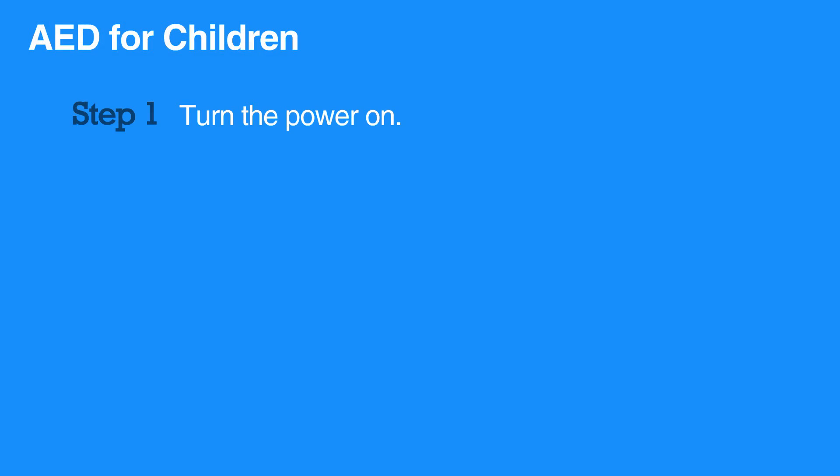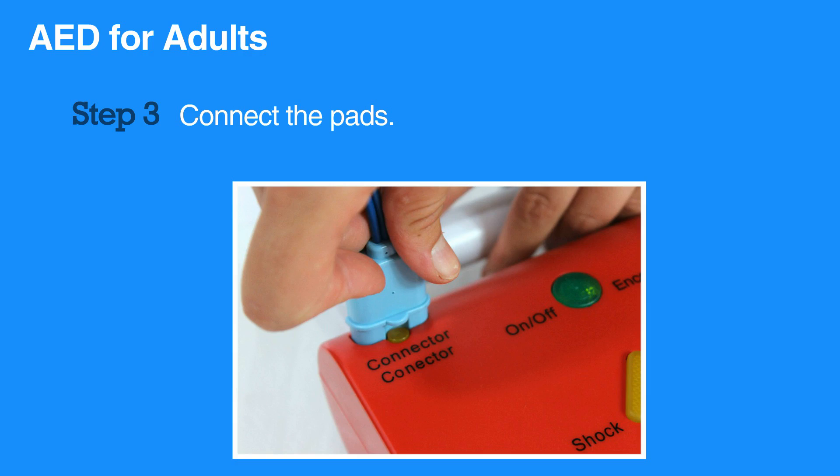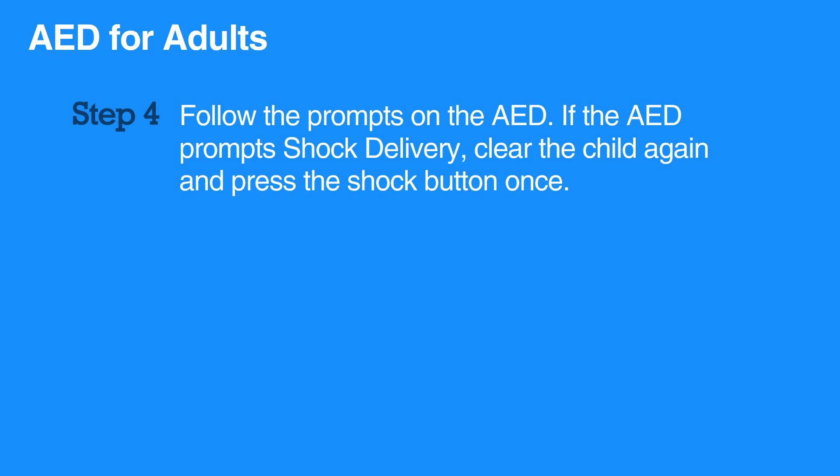To use an AED on a child, first turn the power on. Expose the child's chest, then apply the pads. Ensure that the pads do not touch. Connect the pads to the AED. Clear the child and analyze the rhythm. Follow the prompts on the AED. If the AED prompts for shock delivery, then clear the child again and press the shock button once the AED has charged.